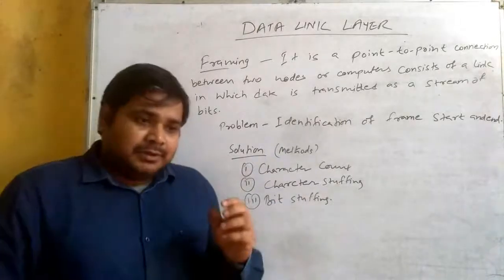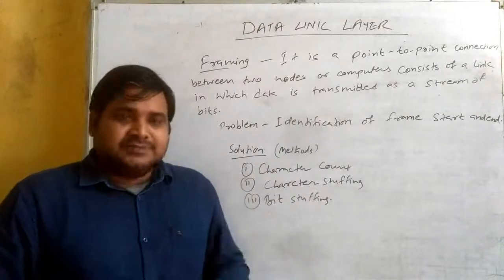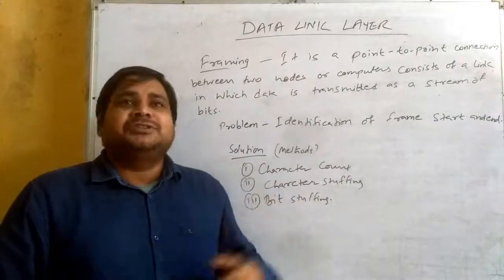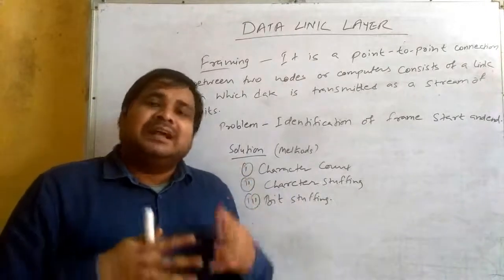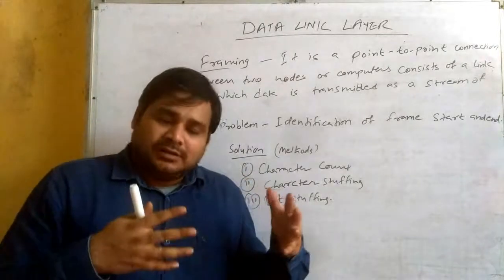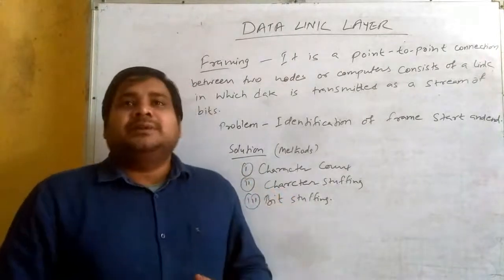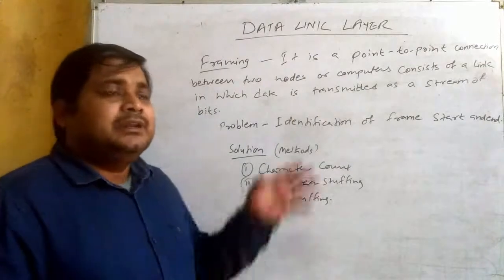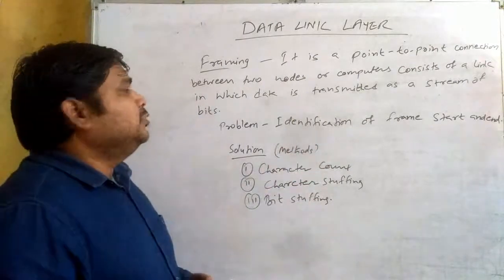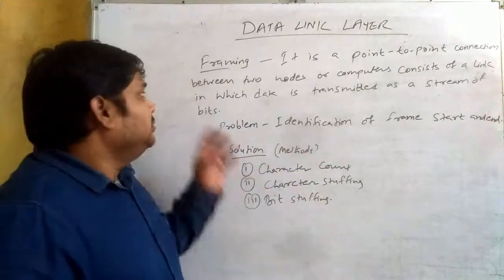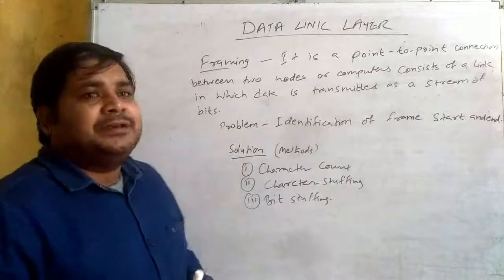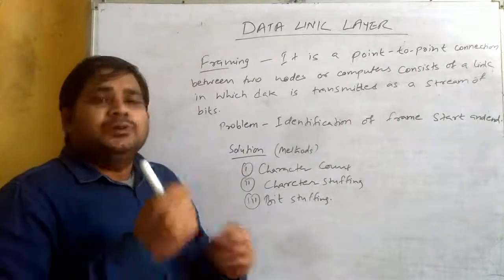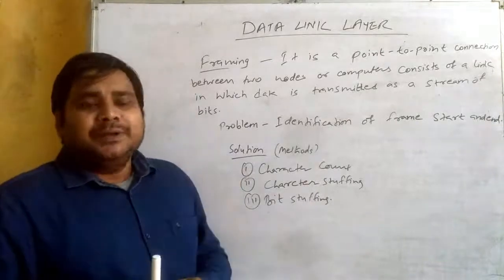The second task which is solved at the LLC sublayer — that is the logical link control sublayer in the data link layer in the OSI model — is framing. Framing is a very important task, which is the task of data link layer.